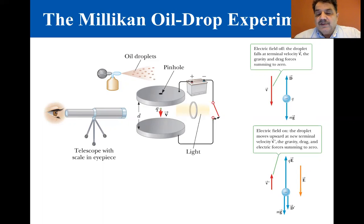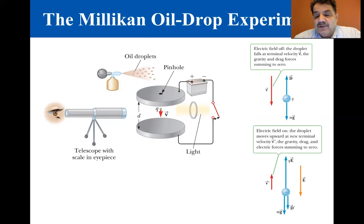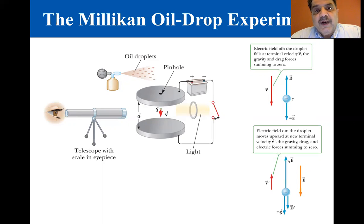If this force is great enough, the drop moves upward and the drag force D acts downward. When the upward electric force QE balances the sum of the force of gravity and the drag force — both acting downward — the drop reaches a new terminal speed V prime.